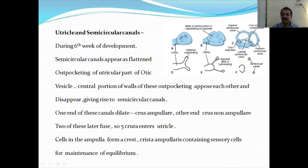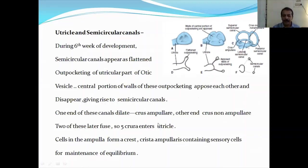These semicircular canals have two ends. One end dilates — that is known as the crista ampullaris — and the other end they will also dilate and are known as the crus non-ampullare. Three crus non-ampullare: two of them will fuse, and ultimately there will be five openings of the semicircular canals — three crista ampullaris and two crus non-ampullare.